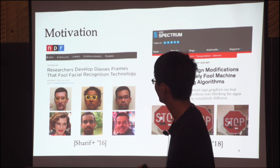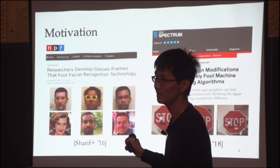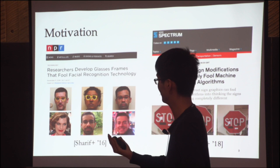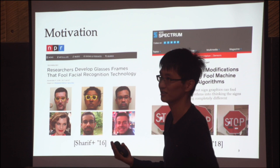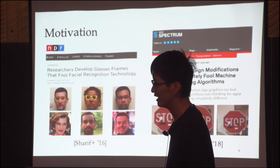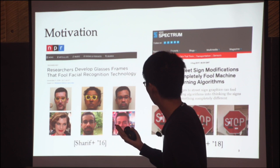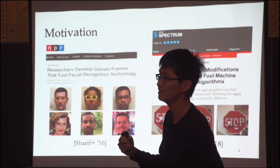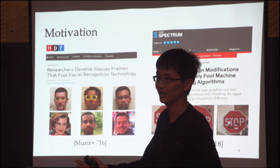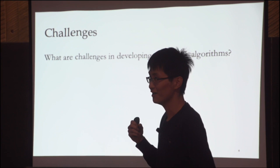Here are two more examples. On the left, researchers showed that you can fool a commercial-grade facial recognition system by wearing carefully printed glass frames. The top row shows who the people really are, and the bottom row shows who the facial recognition software thinks they are. On the right, people demonstrated that you can put black and white stickers on stop signs to trick a computer vision algorithm into thinking it's a speed limit sign. Just as you want your automated trading algorithm not to be fooled by a single tweet, you probably want your self-driving car to reliably identify stop signs.